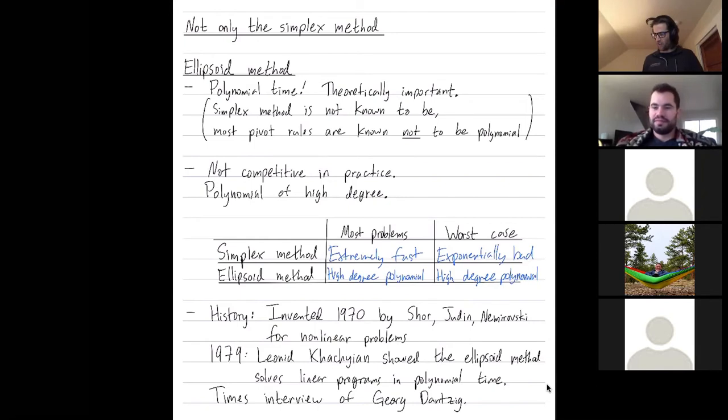And Brown was trying to stir up controversy. Hey, look, the Russian mathematicians have now found a polynomial time algorithm.